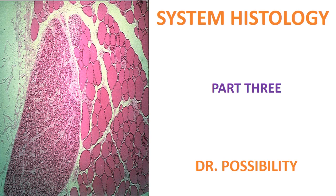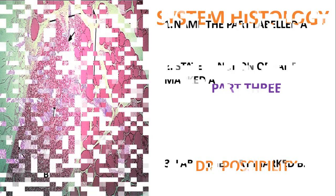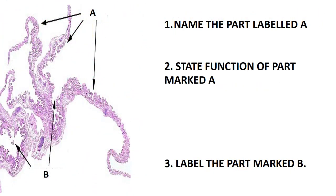Make sure that you register with Excel Academy. Let's quickly look at some questions and slides. The first question is: name the part labeled A. So if you look at this part, this slide is just a part of the fallopian tube, and the part labeled A is just the fimbria.